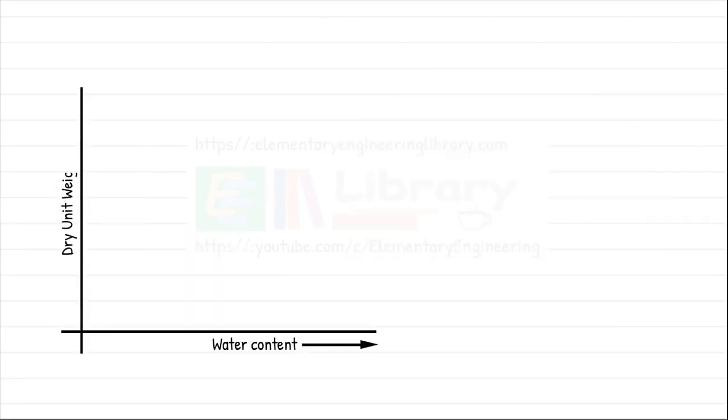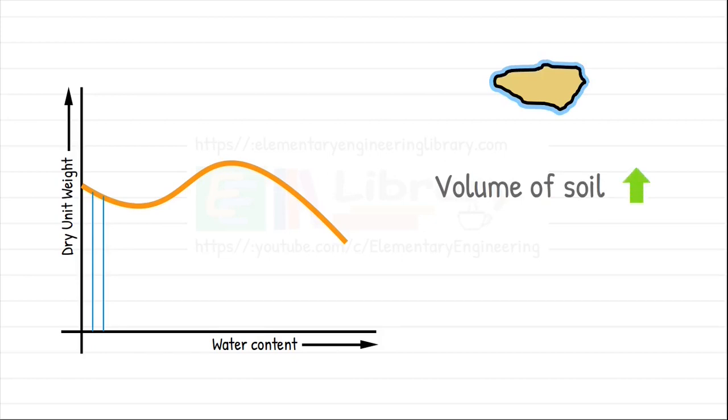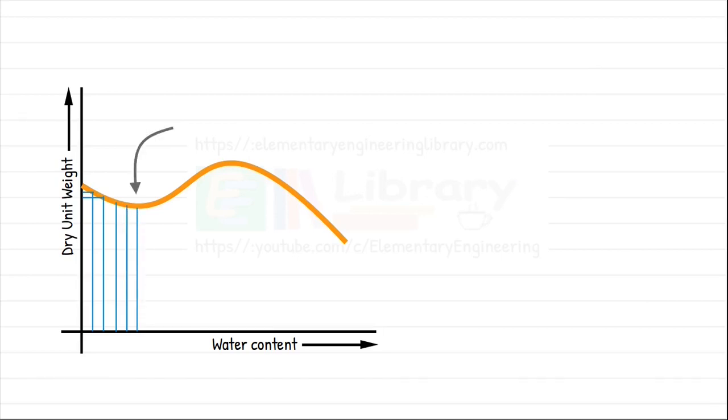In the compaction curve of sand, as the water content is increased, the water forms thin film around the sand grains and resists them to take a denser configuration. Hence the volume of soil increases and the dry density, which is mass by volume, begins decreasing. When we keep on increasing the water content, sand reaches a point where it shows the effect of bulking most and dry density is least.